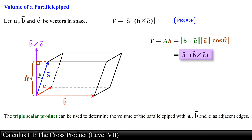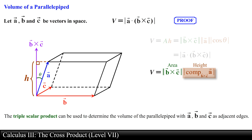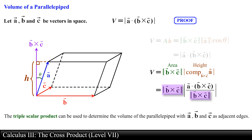Substituting these expressions for the area of the base and the height, we obtain an expression for the volume of the parallelepiped. Recall that this is nothing more than the geometric definition of the dot product, making sure we take the absolute value since volumes are positive values. We can also use the scalar projection of vector A onto the vector produced by crossing vector B and vector C, again making sure we use the absolute value. The magnitude of the cross product cancels out and we are left with the same expression for the volume of the parallelepiped.